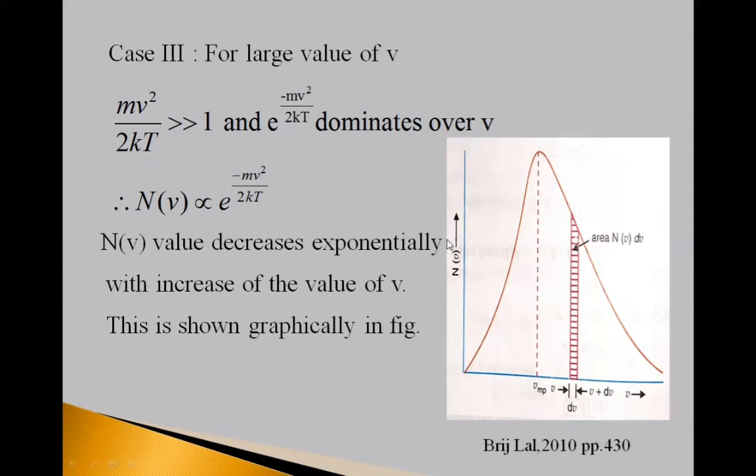This is shown graphically. See here, from this graph, here on x-axis, velocity is shown v. On y-axis, N(v) number of molecules are shown. So, the graph is a bell shape graph.